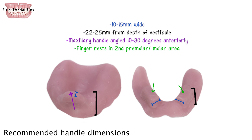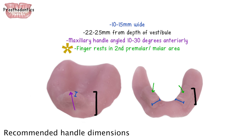Sample dimensions of handles can be seen on the screen. Mediolaterally, handles may be 10 to 15 millimeters wide and 22 to 25 millimeters high from the vestibule. Maxillary handles should be angled anteriorly 10 to 30 degrees from perpendicular to the crest of the ridge. Mandibular handles should extend perpendicular from the crest of the ridge, and finger rests should be seen on the second premolar or molar area.